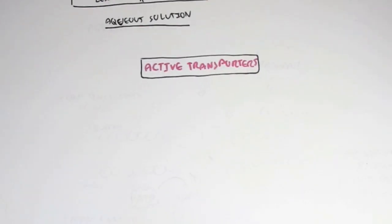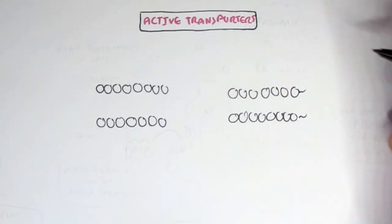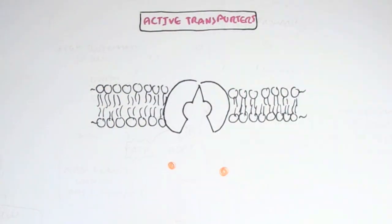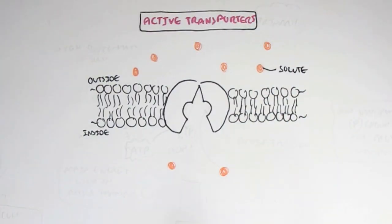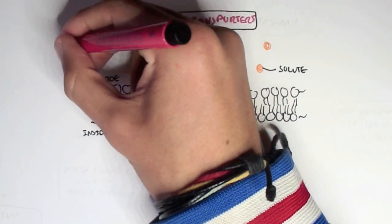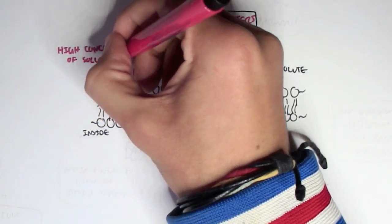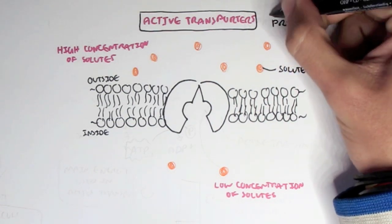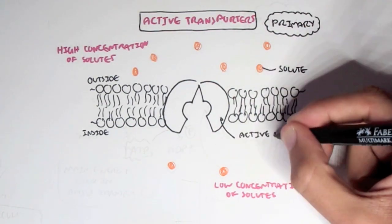Let's look at a quick example. Here we have a lipid bilayer and an active transporter. The solutes are highly concentrated on the outside of the cell compared to the inside. This is an example of a primary active transporter, and we'll look at the difference between primary and secondary soon.